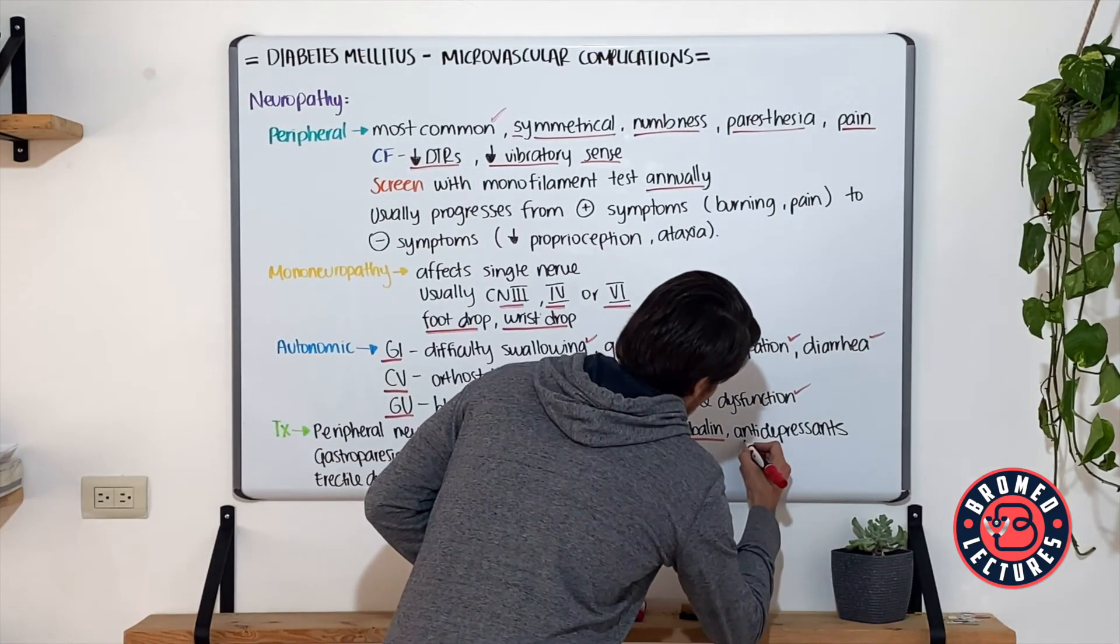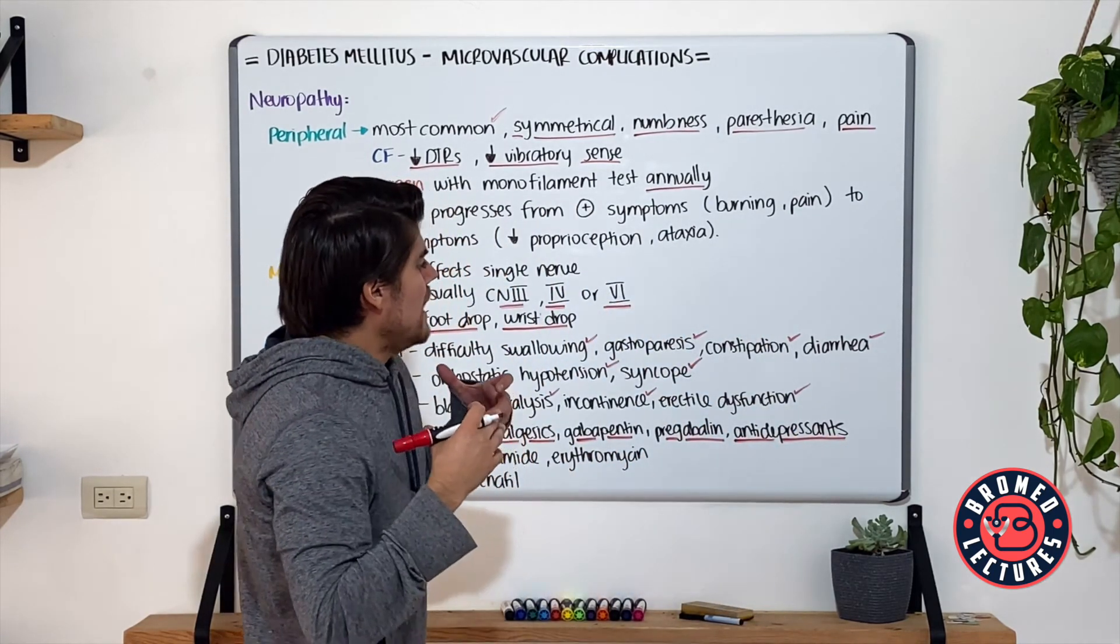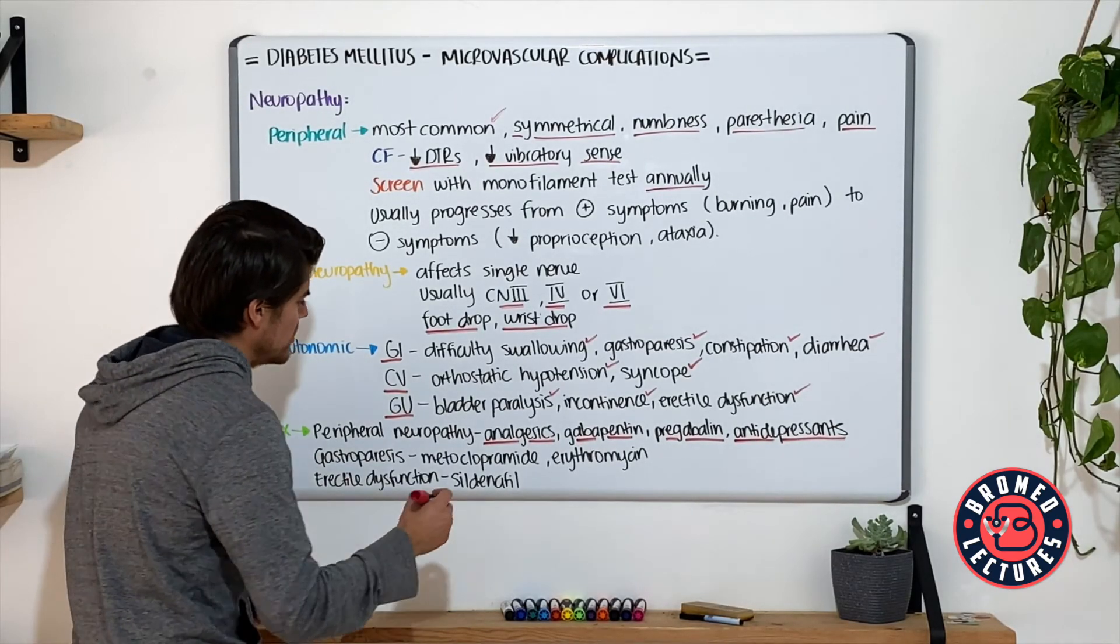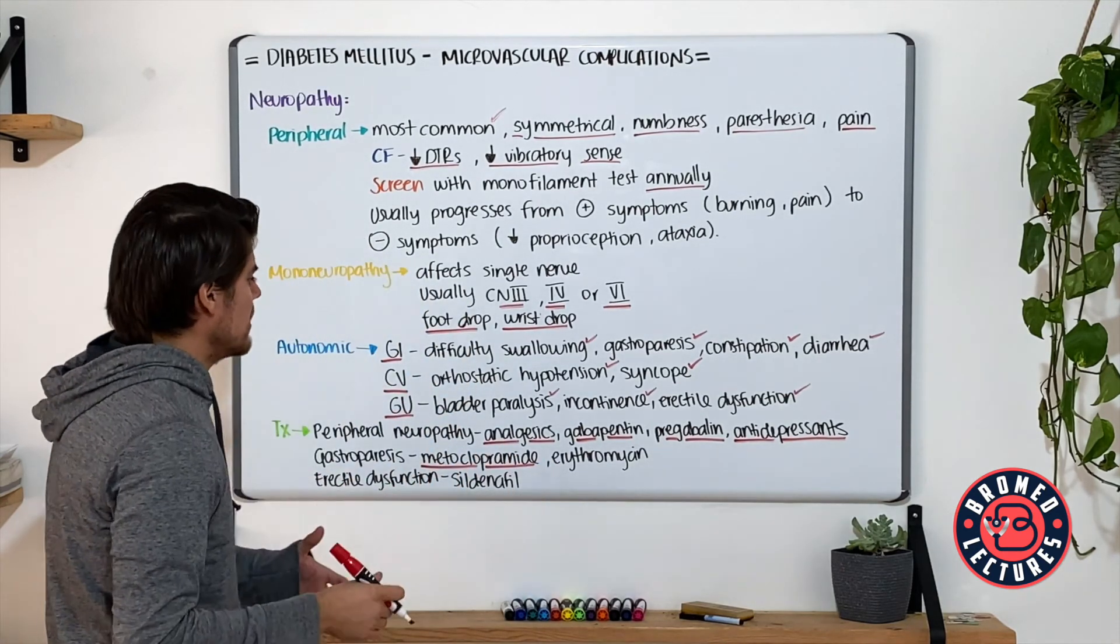As a second line, we have other medications, which are antidepressants such as amitriptyline. For gastroparesis, what we usually do is add metoclopramide. This is a dopamine antagonist.